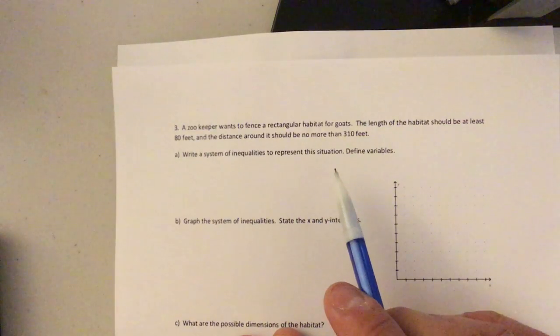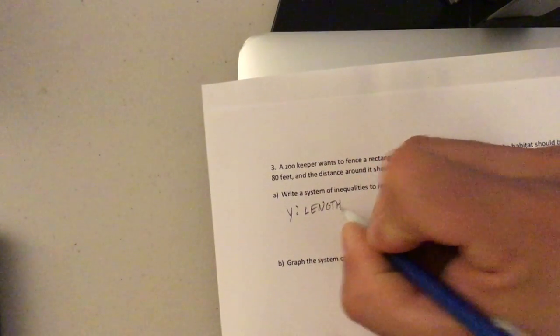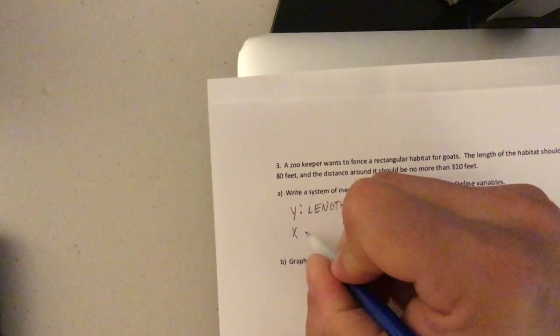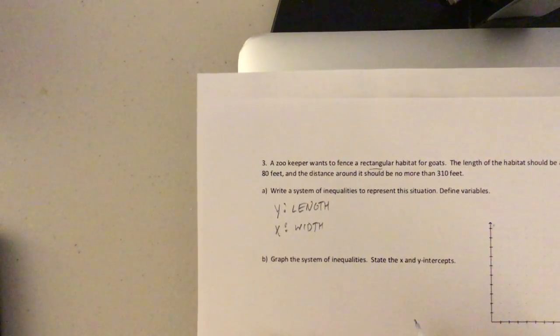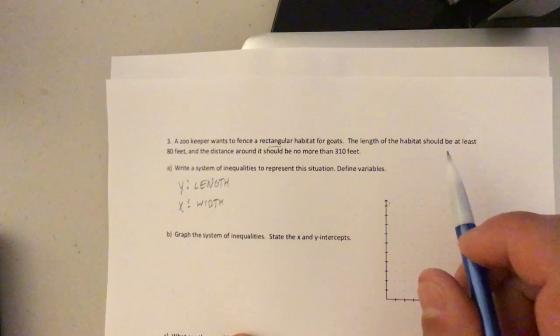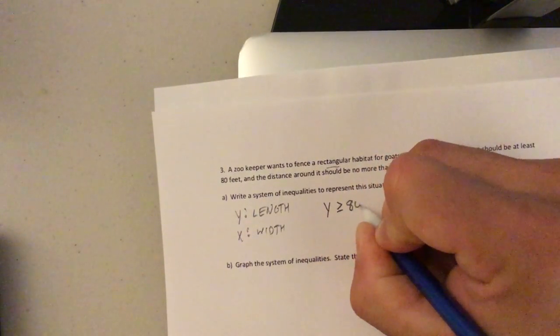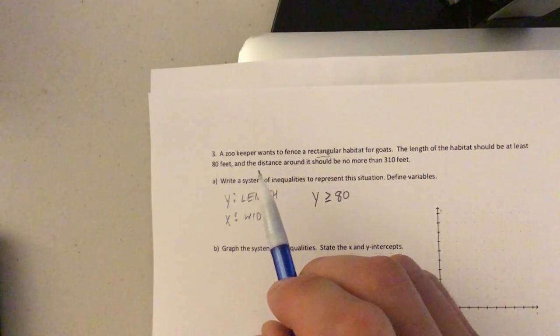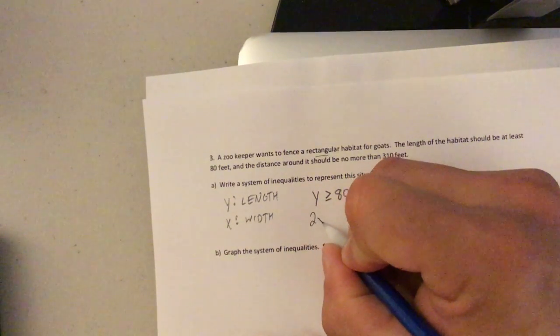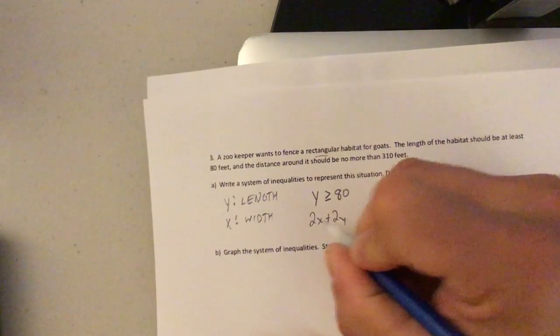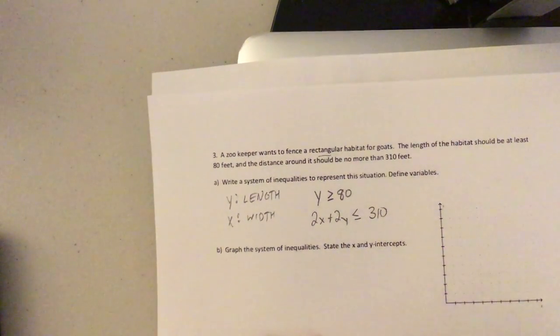Write a system of inequalities to represent this situation, define the variables. We're going to call Y length. You could just as easily make X length, it just fits a little nicer on the graph, just throwing it out there. And therefore, X is going to be our width. If it's a rectangle, it has length, it has width. Okay. The length of the habitat should be at least 80 feet. So that means Y must be greater than or equal to 80. Okay. And the distance around, AKA the perimeter, should be no more than 310 feet. Well, perimeter, that would be two times the length plus two times, excuse me, two times the width plus two times the length must be less than or equal to 310 feet. No more than, that's where we get that.